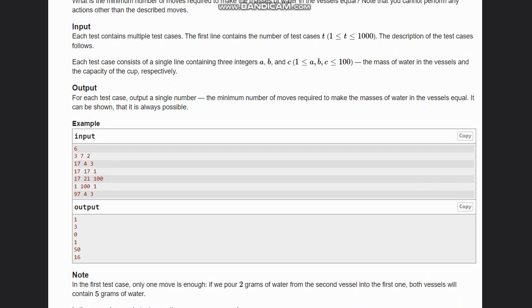So here, let's first see the examples. What we are given: we are given a, the amount of water in one vessel, b, the amount of water in another vessel, and c, which it can hold in one move.